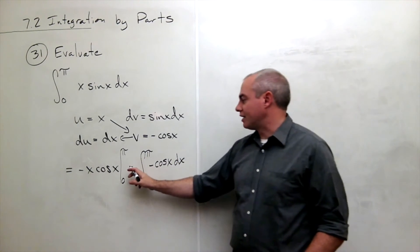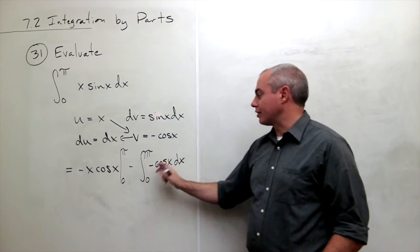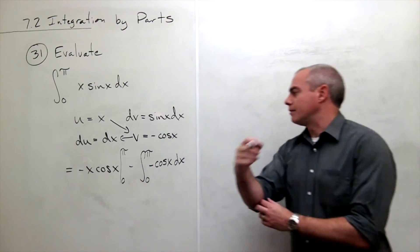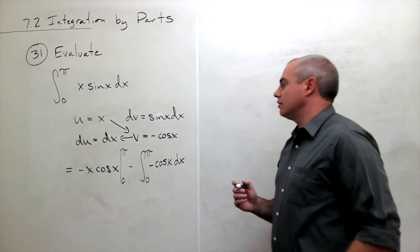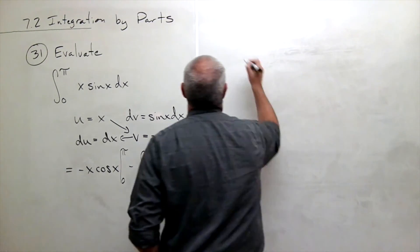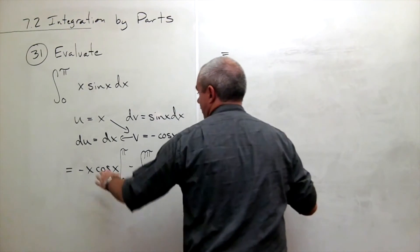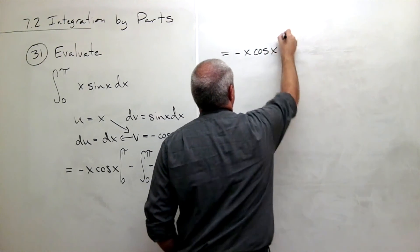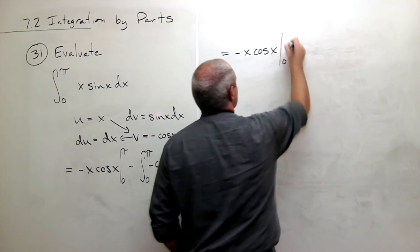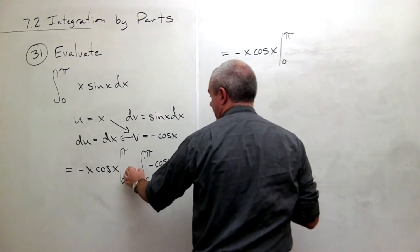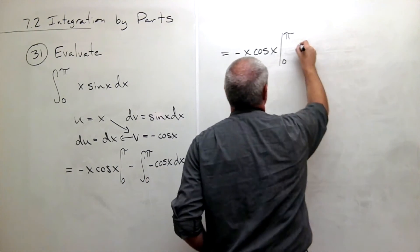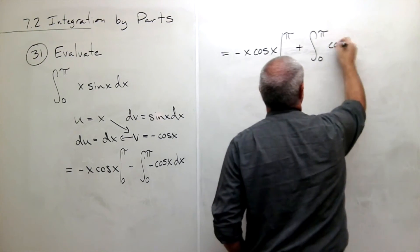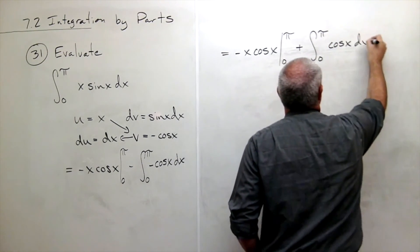And you see that I have a negative outside of my integral, I have a negative inside of my integral. So I could cancel those out, make them positive. I'll just rewrite this thing. This is negative x cosine x evaluated from 0 to pi. And then this minus times minus gives me plus the integral from 0 to pi of cosine of x dx.